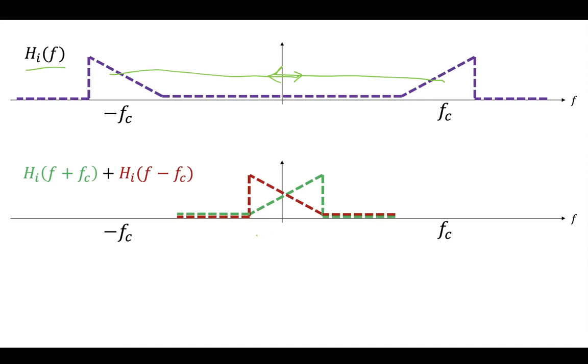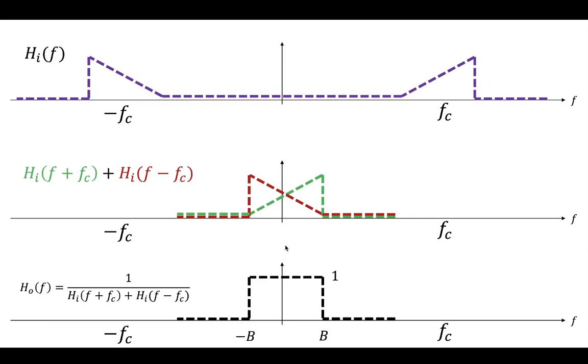So somewhere here in your baseband components, they've been shifted down and summed together. Now, your output filter is designed such that 1 over this summation is equal to 1. And so this is how the input and output filter are designed to be complementary.